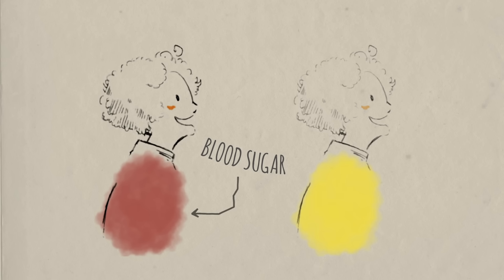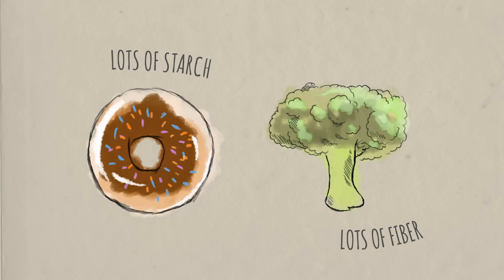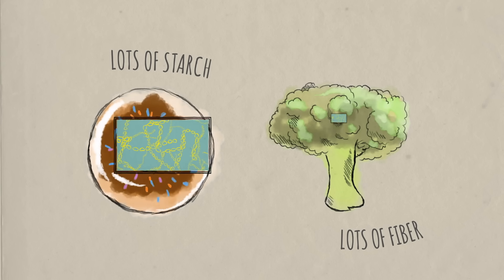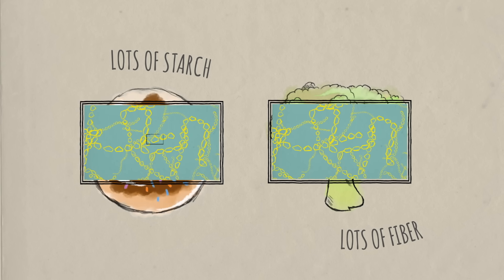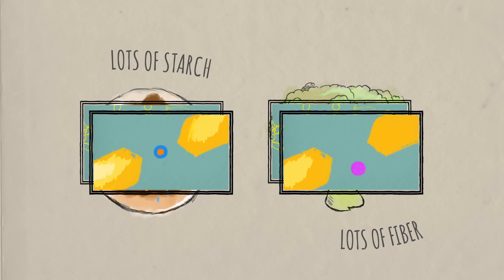Consider starch and fiber. Both polysaccharides, both derived from plants, both composed of hundreds to thousands of monosaccharides joined together, but they're joined together differently, and that changes the effect they have on your body.